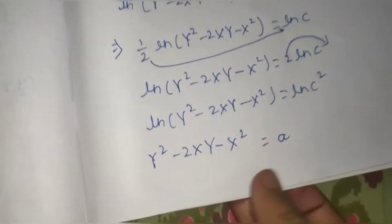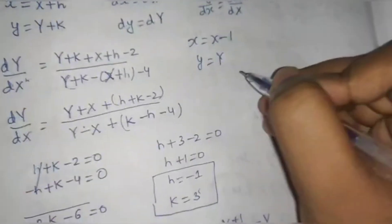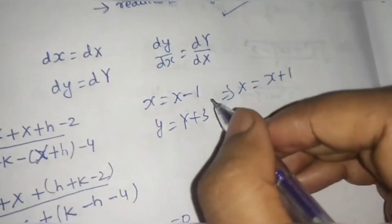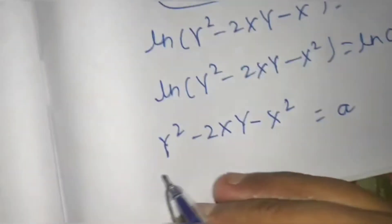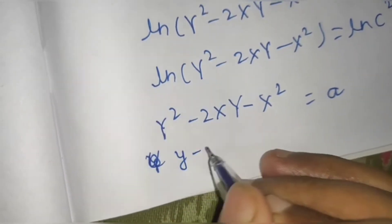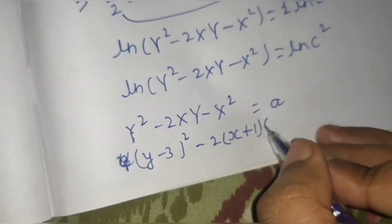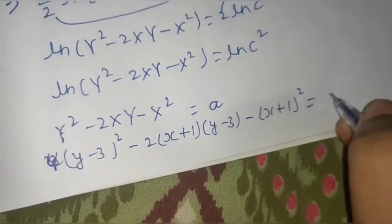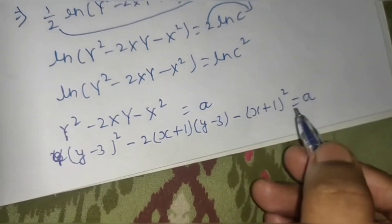Now back-substitute using X = x + 1 (since x = X + h and h = −1) and Y = y − 3 (since y = Y + k and k = 3). The final answer is: (y − 3)² − 2(x + 1)(y − 3) − (x + 1)² = A.